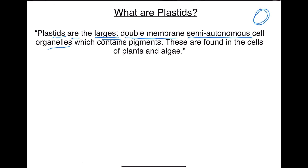These are double membrane semi-autonomous organelles. Semi-autonomous means they have their own DNA and ribosomes, so they can produce their own proteins which are utilized by themselves to perform different functions. They can also divide themselves by self-replication and produce their own copies. That's why they are called semi-autonomous — because they have their own DNA and ribosomes, can produce proteins, divide themselves, and make their own copies. They also contain pigments.